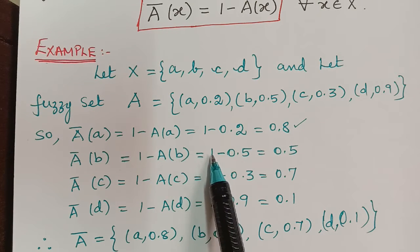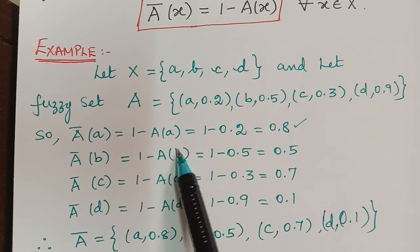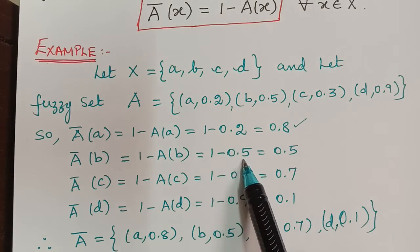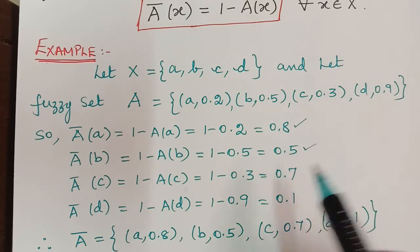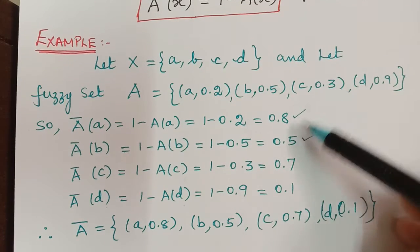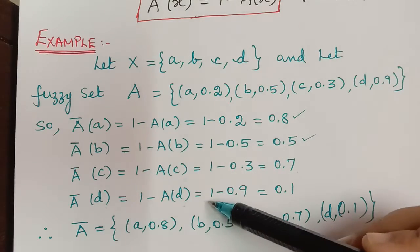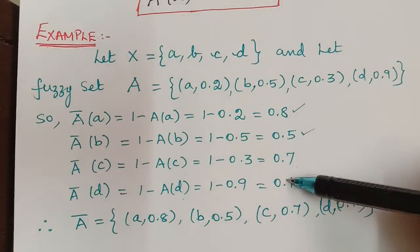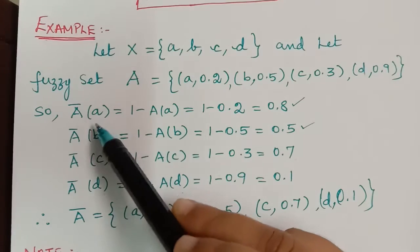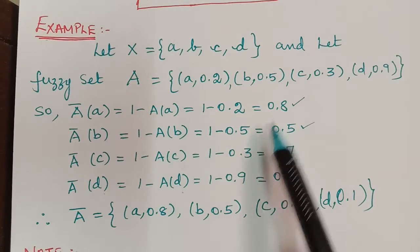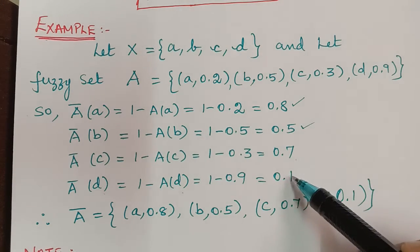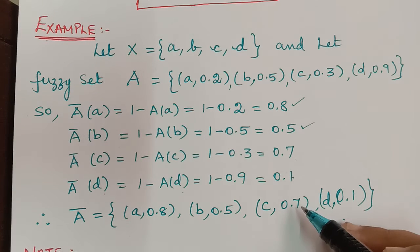Similarly, ā(b) = 1 − A(b) = 1 − 0.5 = 0.5. For c: 1 − 0.3 = 0.7, and ā(d) = 1 − 0.89 = 0.1. Therefore, the complement set ā = {a/0.8, b/0.5, c/0.7, d/0.1}.